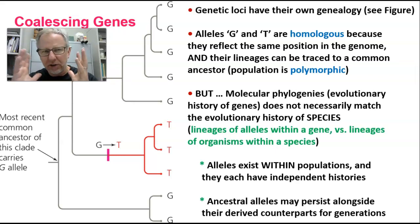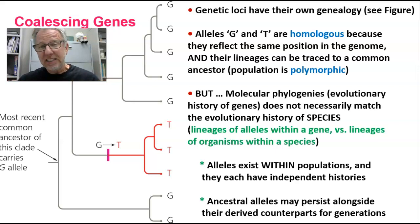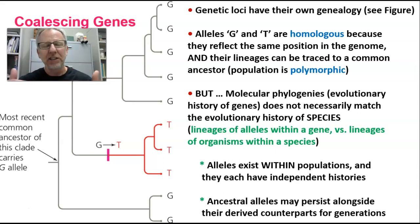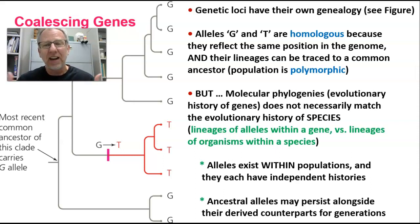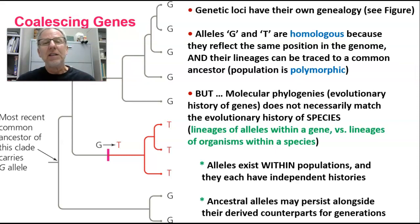A key thing to understand right now is that while we use different genes to estimate the evolutionary history of species — species phylogenies — it's really important to understand that molecular phylogenies, the evolutionary history of genes, does not always match up to the evolutionary history of species. There are lineages of alleles within a gene, and we can trace those just like in the diagram. But there are also lineages of organisms within species. These are different kinds of lineages.